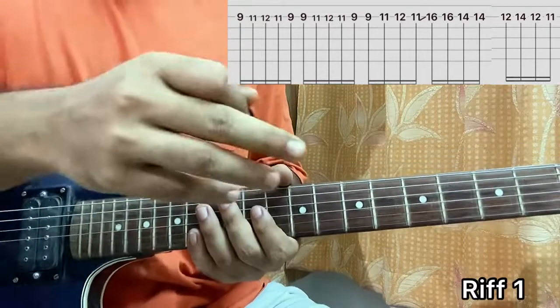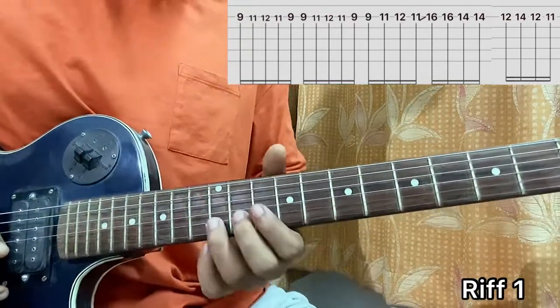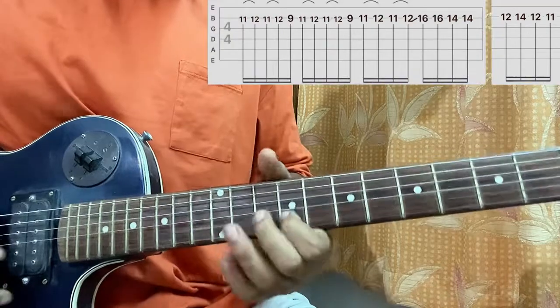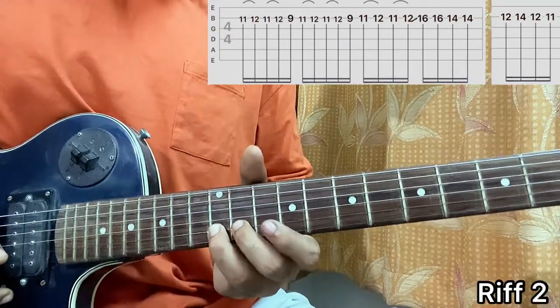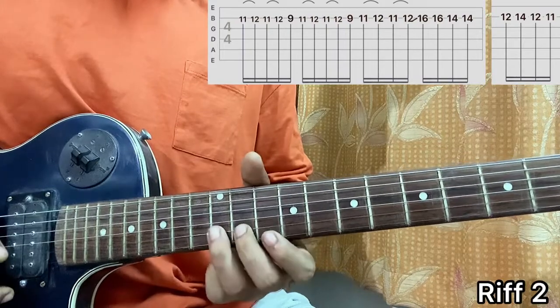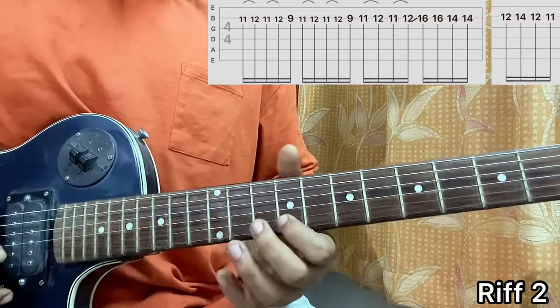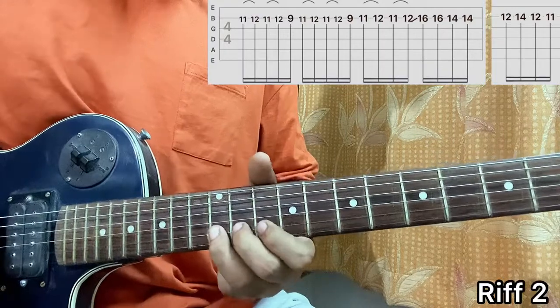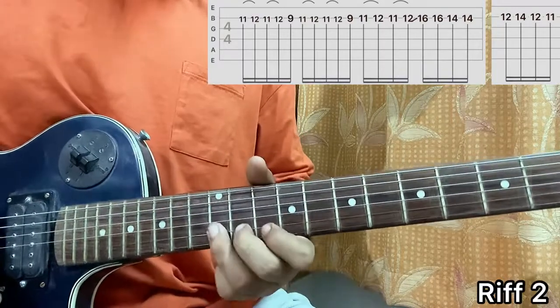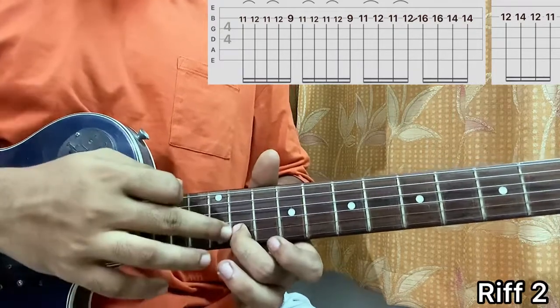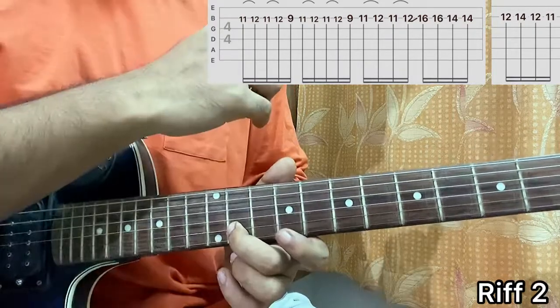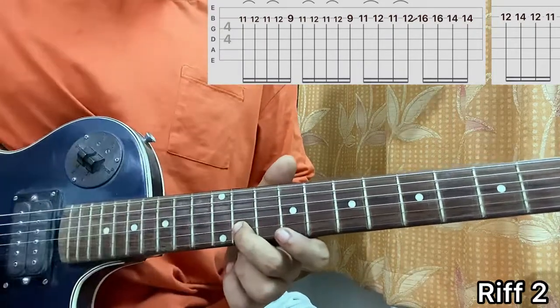Now, another riff we have. I heard this, I think, in the second chorus. It's pretty same. The only change, it goes like this. I do a pull-off from 12 to 11 on the B string. Again, do the same thing. Then, play 9th fret on the B string. Repeat that.